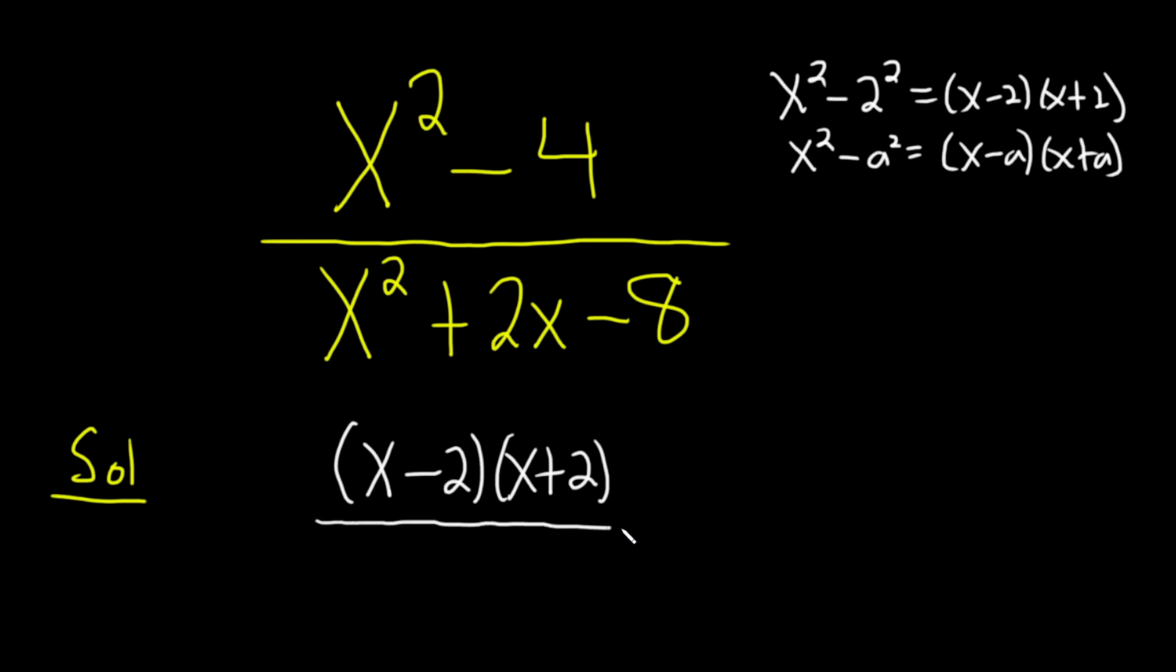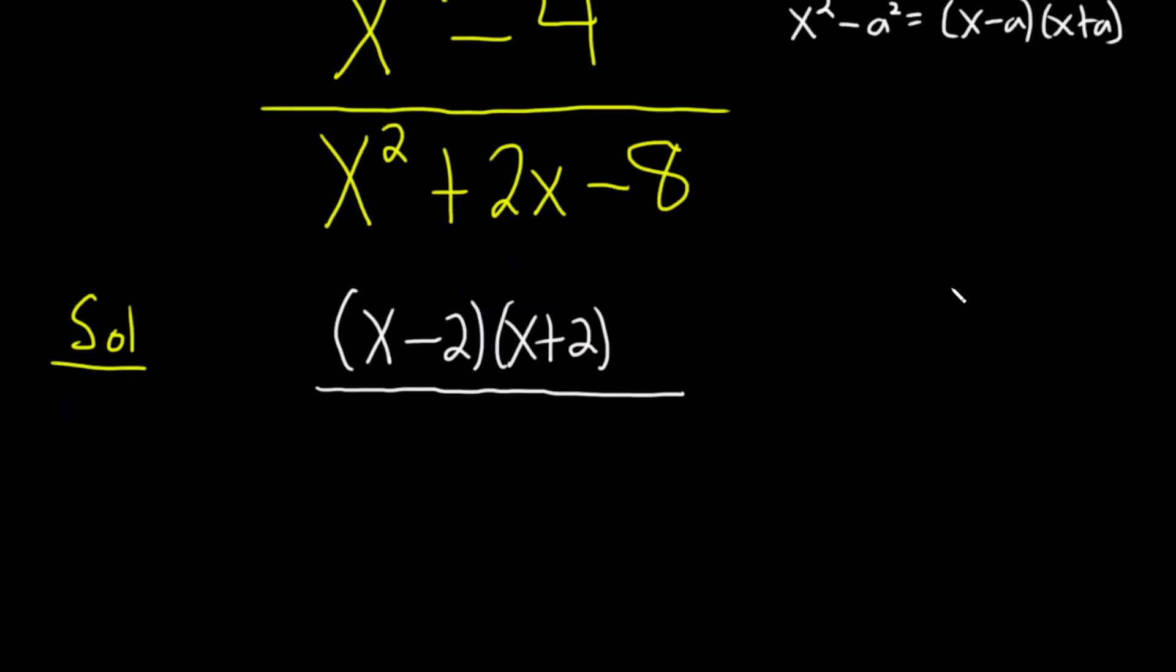In the denominator, we're going to have to use some guessing perhaps. So let's see. We need two numbers that multiply to negative eight and add to positive two. So a positive four and a negative two. I think that's going to do it. Let's check.